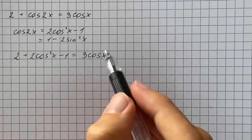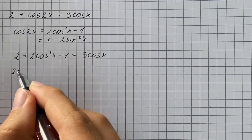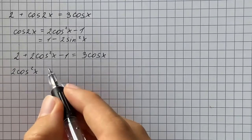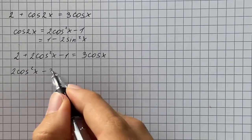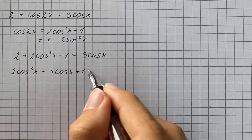And now we're going to make one side equal to 0. So that's going to be 2 cosine squared of x, then we subtract 3 cosine x from both sides, and plus 1 equals 0.